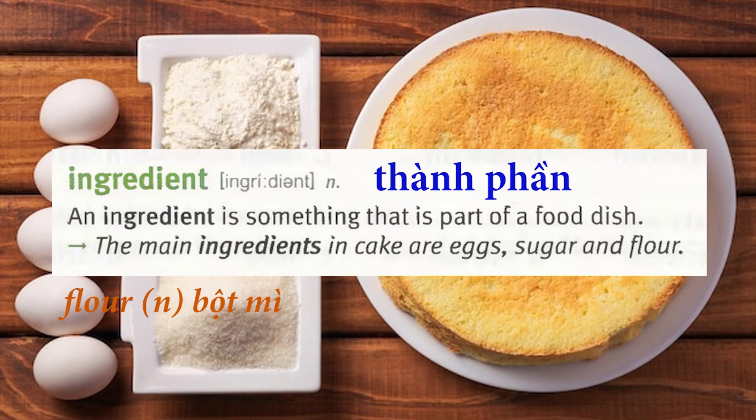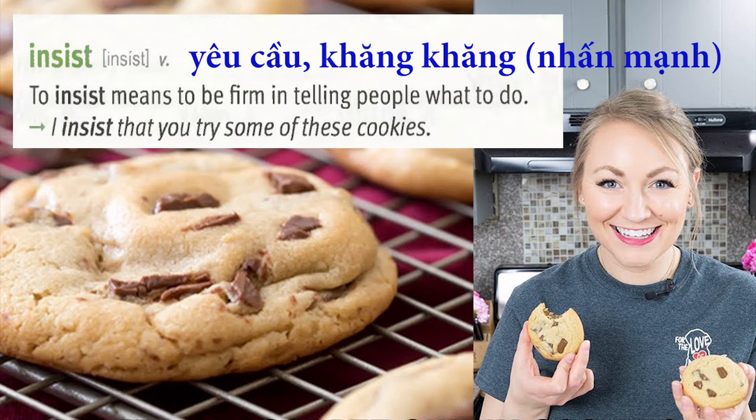Ingredient: An ingredient is something that is part of a food dish. The main ingredients in cake are eggs, sugar, and flour. Insist: To insist means to be firm in telling people what to do. I insist that you try some of these cookies.